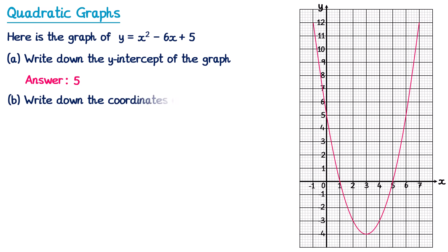For part b it says: write down the coordinates of the turning point. The turning point of the graph is the point at the bottom where the graph turns. Its coordinates are 3 for the x-coordinate and negative 4 for the y-coordinate, so the answer for the turning point is 3, negative 4.